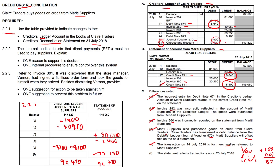Question 2.2.2: the internal auditor insists that direct EFT payments must be used to pay suppliers. One reason: it's quick, easy, efficient, and convenient to monitor. One internal control procedure: only allow senior staff to authorize EFT transactions, or require two people to authorize each payment — division of duties — to prevent collusion. Someone independent should check what has been done.